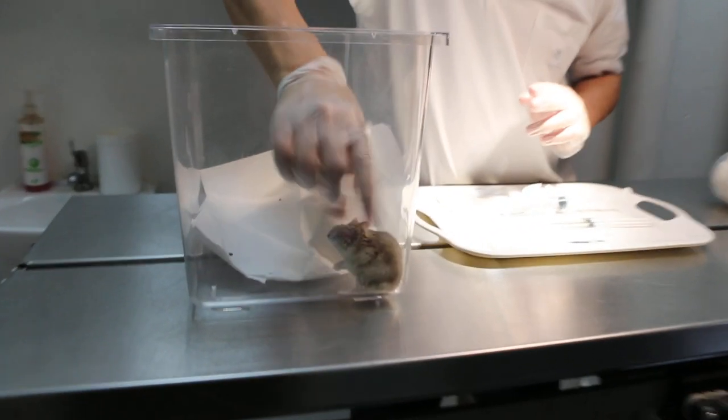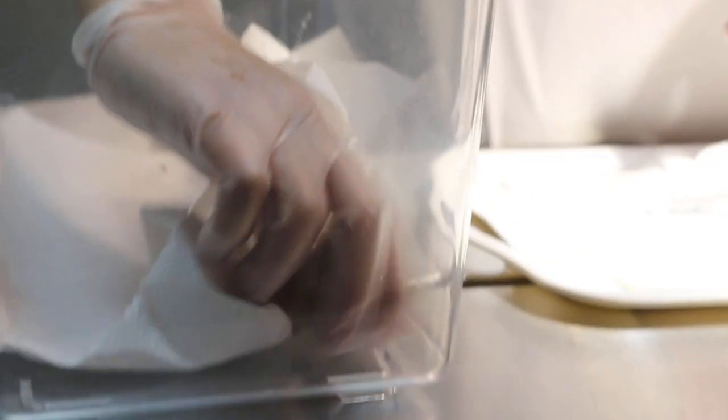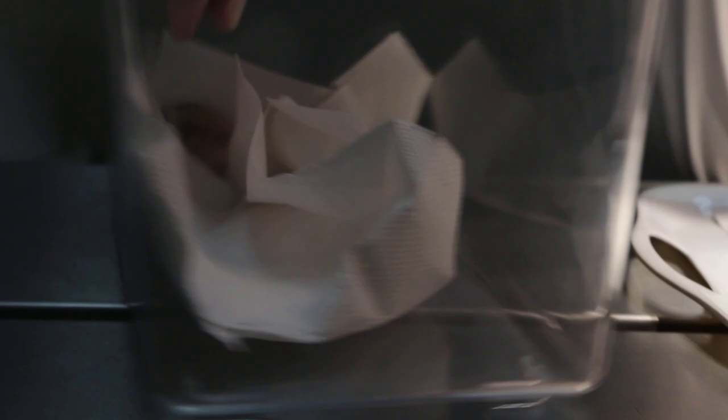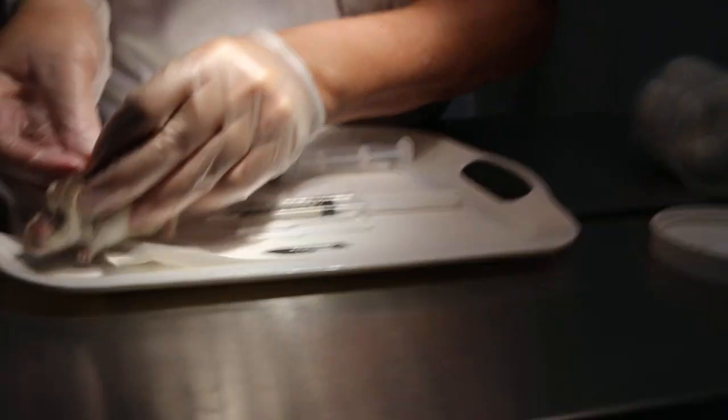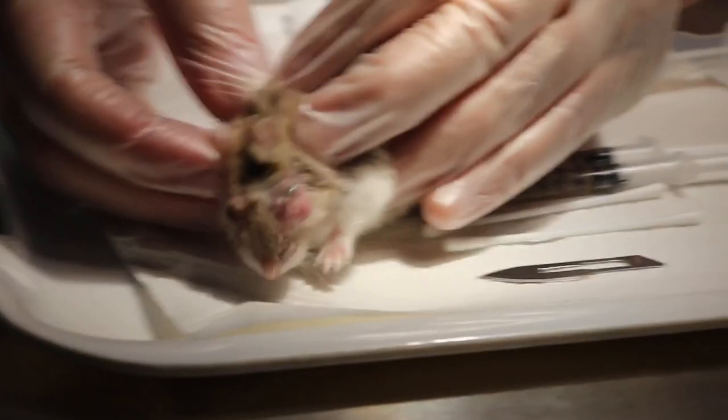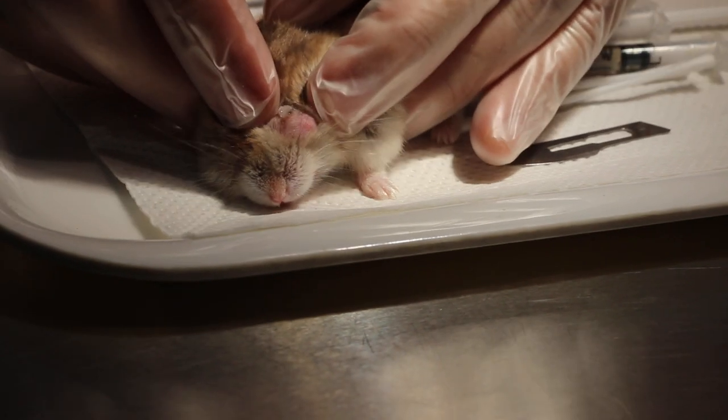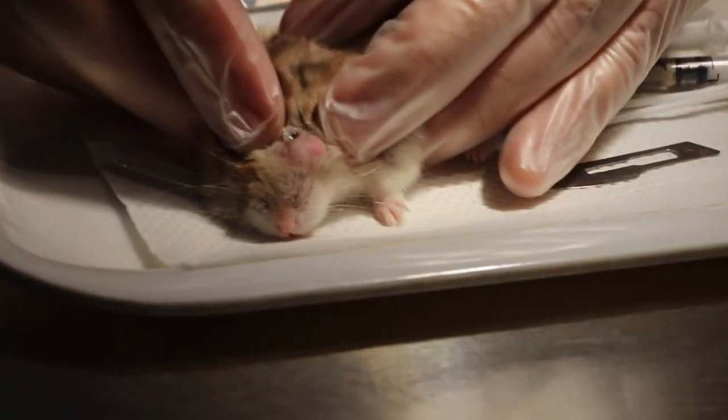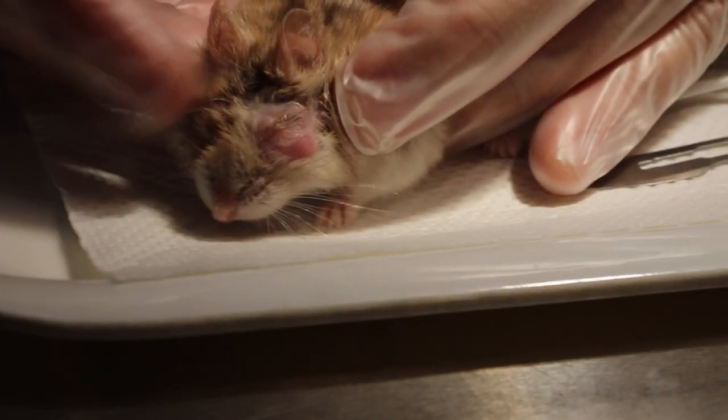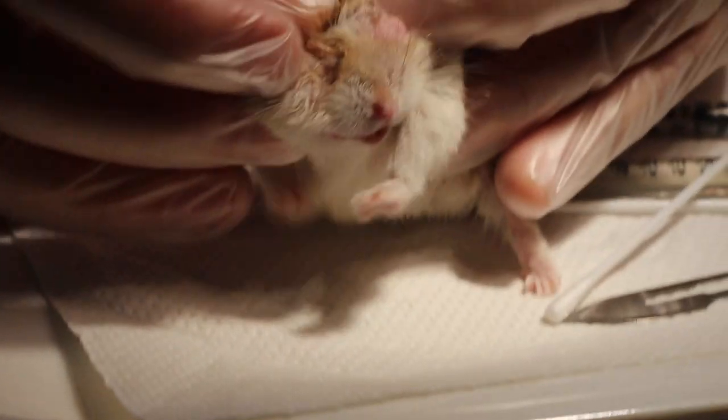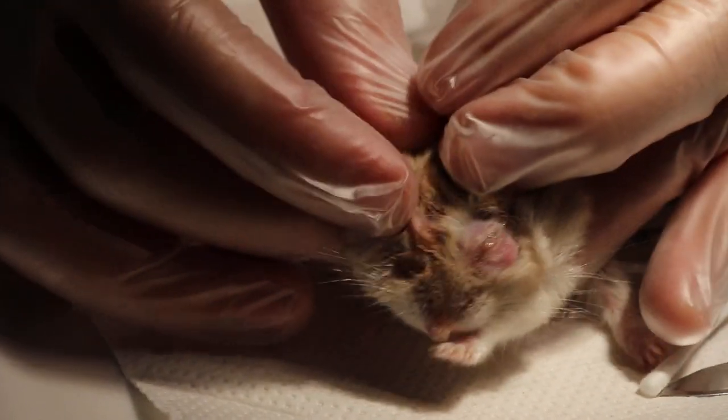This dwarf hamster was brought in today by a good mother and this hamster here has got a swollen eye. You can see the eye is swollen and full of pus. You can see the pus and there is the left eye.